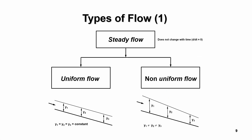Now the different types of flow. We'll be talking mainly about steady flow, which means the discharge does not change over time. Under steady flow, we can have uniform flow where the depth along the channel is the same — y1 equals y2 equals y3. In non-uniform flow, there is a change in depth spatially as you move downstream through a channel.